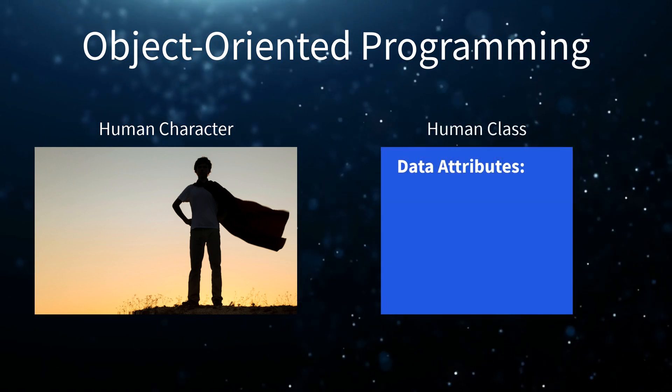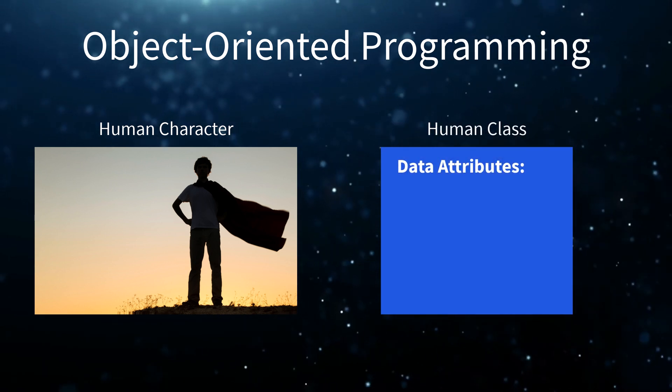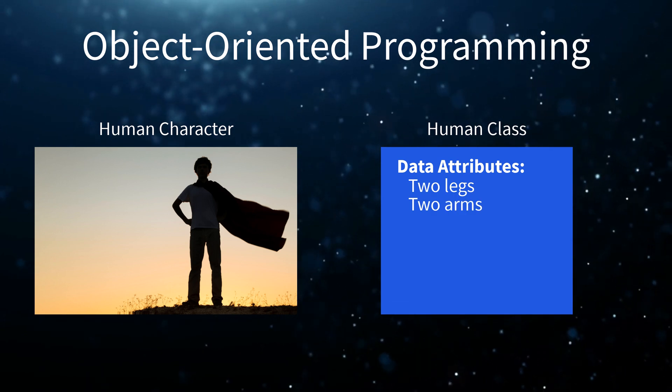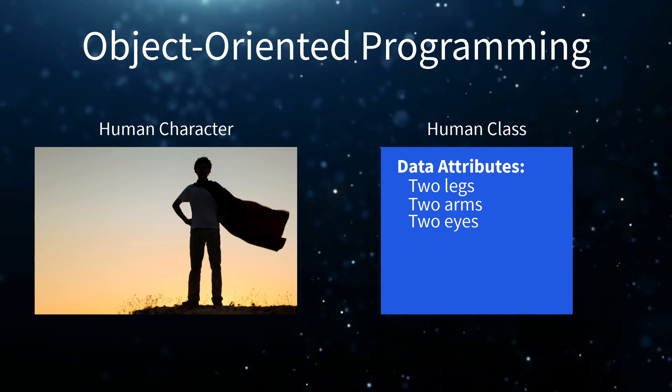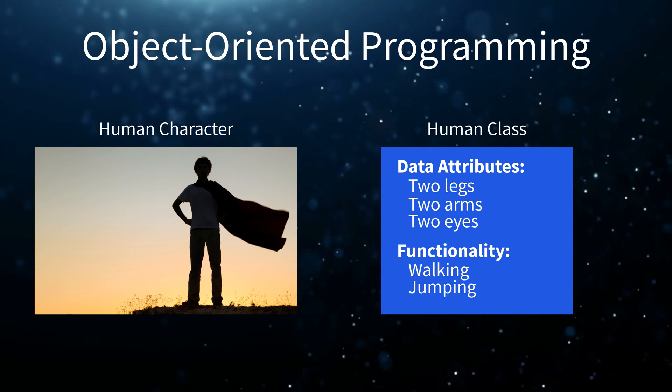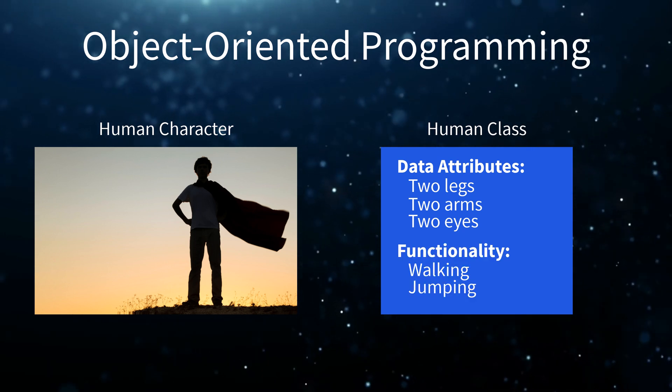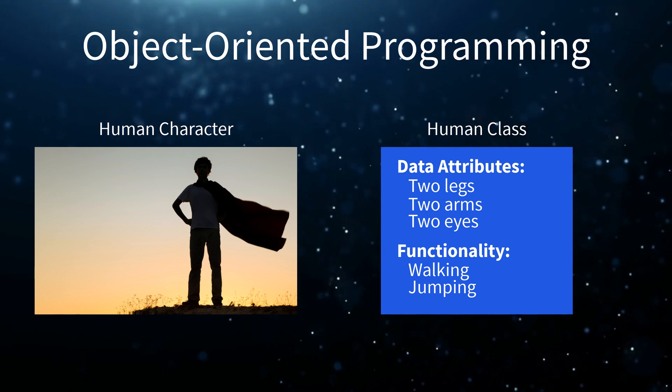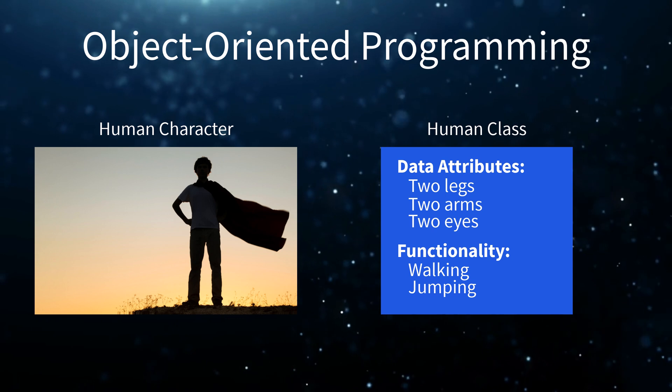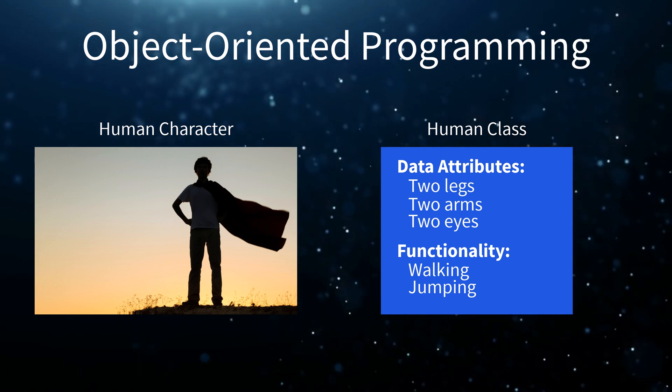For example, you can create the concept of a human character in code which has the same characteristics of a real person. In programming terms, such an object is referred to as a class. A class defines the characteristics of a specific object. For example, the human class may contain the following data attributes: two legs, two arms, two eyes. A class can also contain information about available functionality. This functionality can include functions, methods, routines, etc. We will learn how to create functionality later in the course.